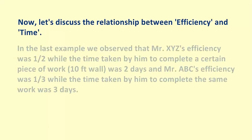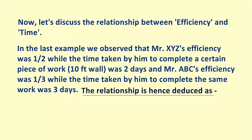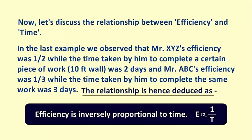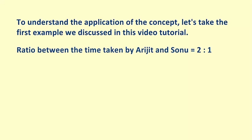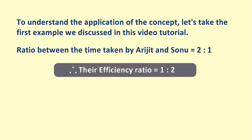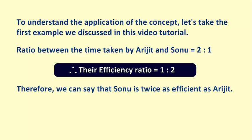Now let's discuss the relationship between efficiency and time. Mr. XYZ's efficiency was 1/2 while the time taken by him was 2 days; Mr. ABC's efficiency was 1/3 while his time was 3 days. The relationship deduced is: efficiency is inversely proportional to time. For example, the time ratio between Arijit and Sonu was 2:1, so their efficiency ratio is 1:2 — the inverse of the time ratio. Therefore, Sonu is twice as efficient as Arijit.